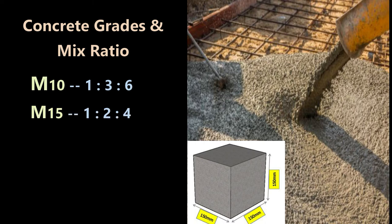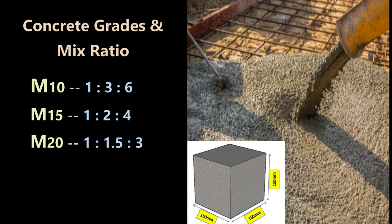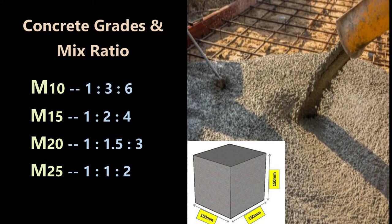M15 grade of concrete has a ratio of 1:2:4 — one part cement mixed with two parts sand and four parts coarse aggregate — achieving a compressive strength of 15 N/mm² at 28 days. M20 grade has a ratio of 1:1.5:3 — one part cement, 1.5 parts sand, and 3 parts coarse aggregate — achieving 20 N/mm² at 28 days.